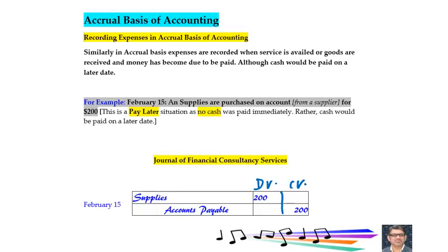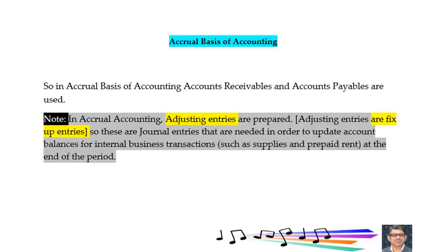This is a pay-later situation as no cash has been paid immediately; rather, cash would be paid on a later date. In this case, supplies would be debit and accounts payable would be credit for the amount of $200. In accrual basis of accounting, we record expenses when those expenses are incurred; money or cash would be paid on a later date, but still we record those transactions today.